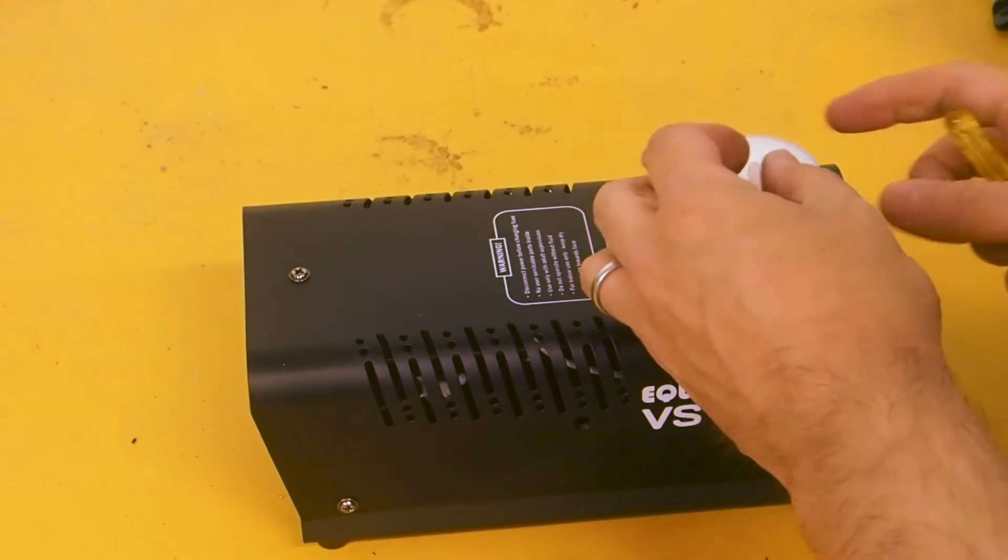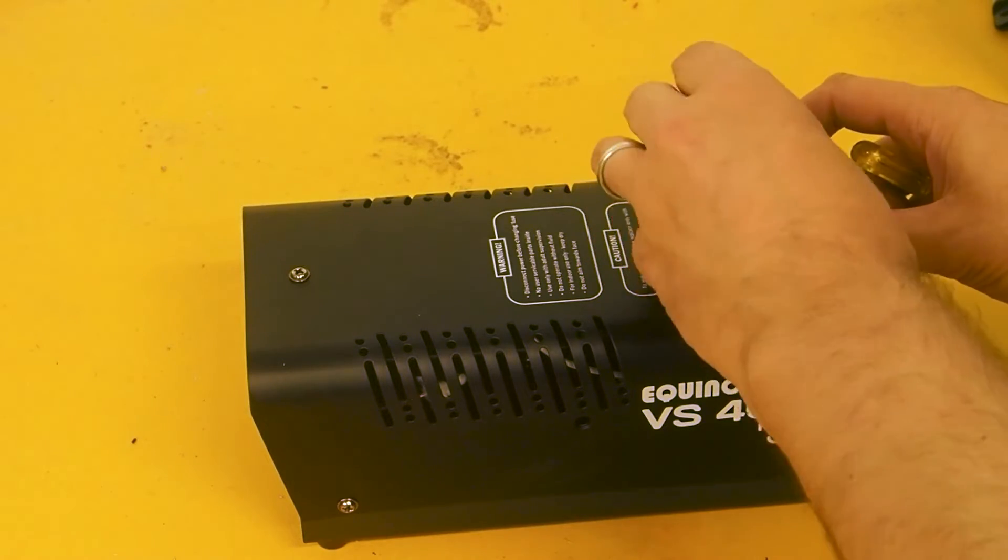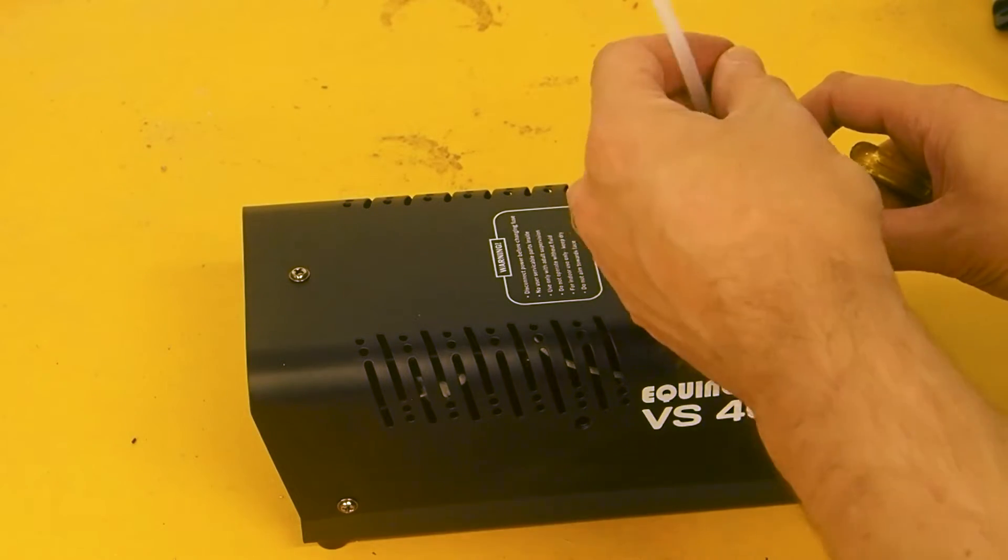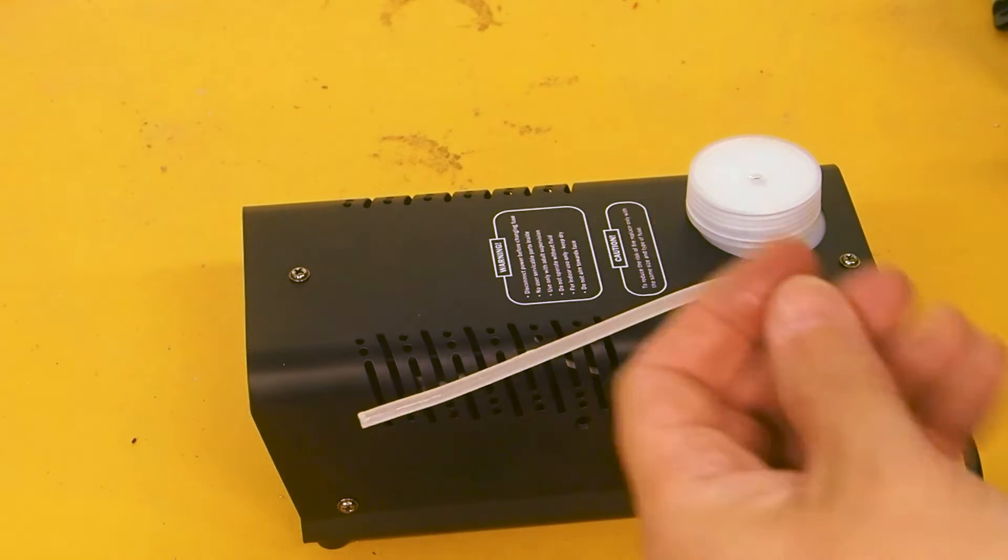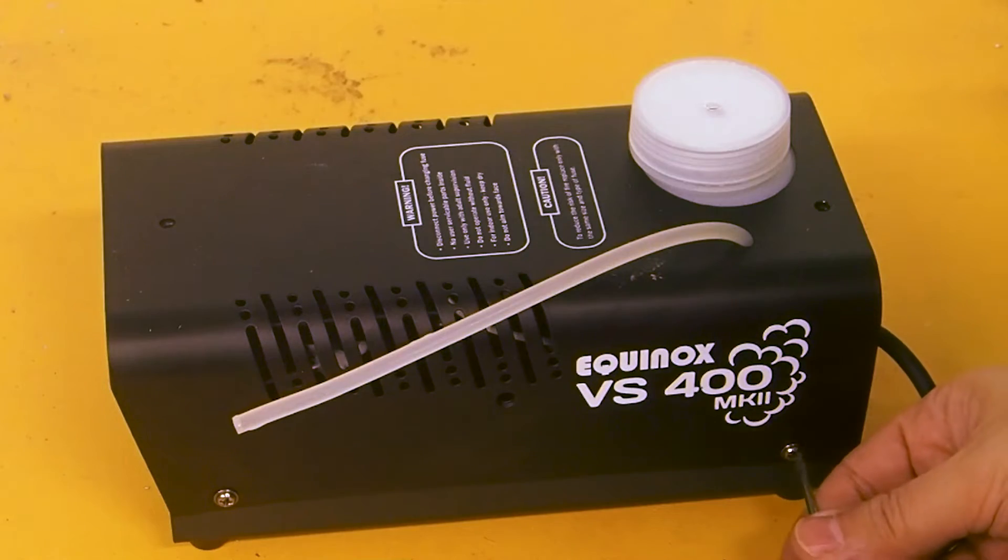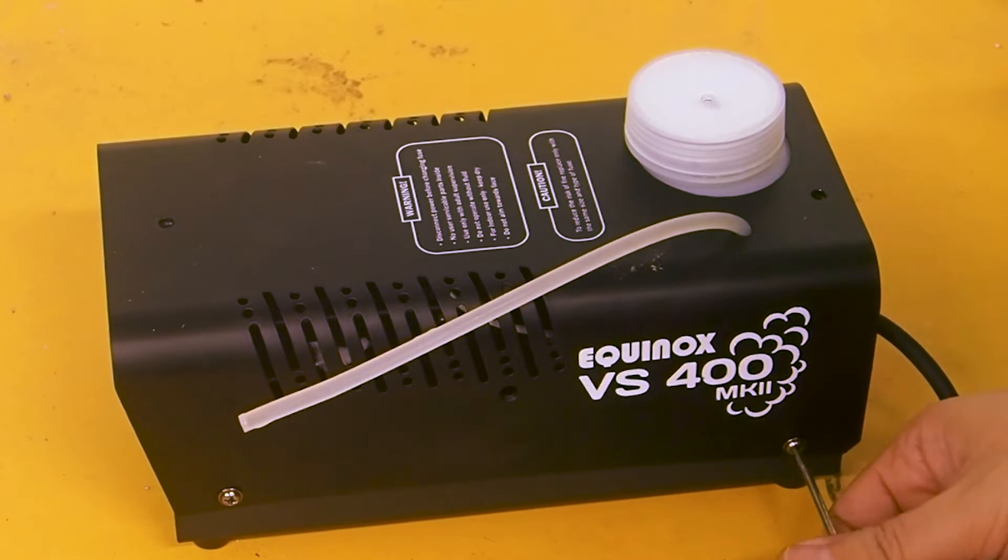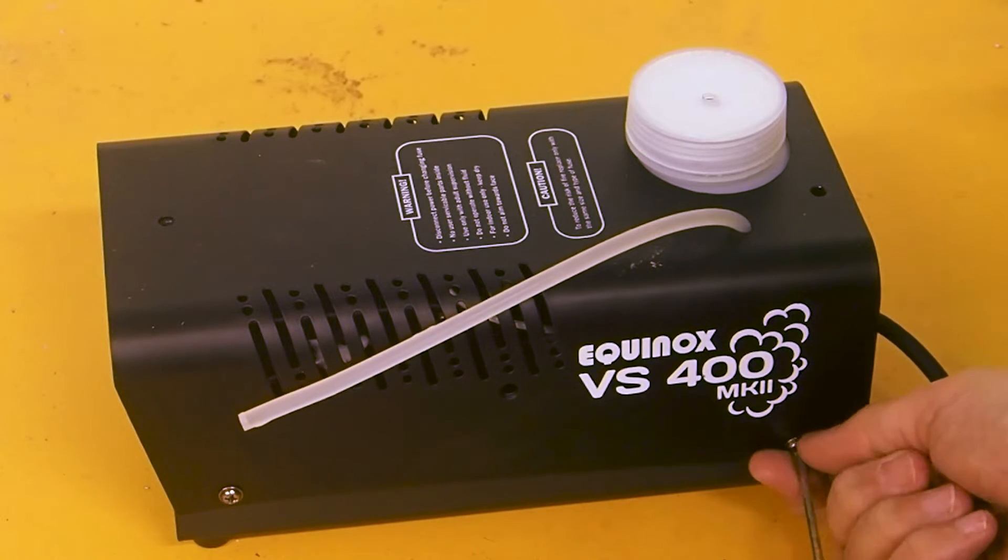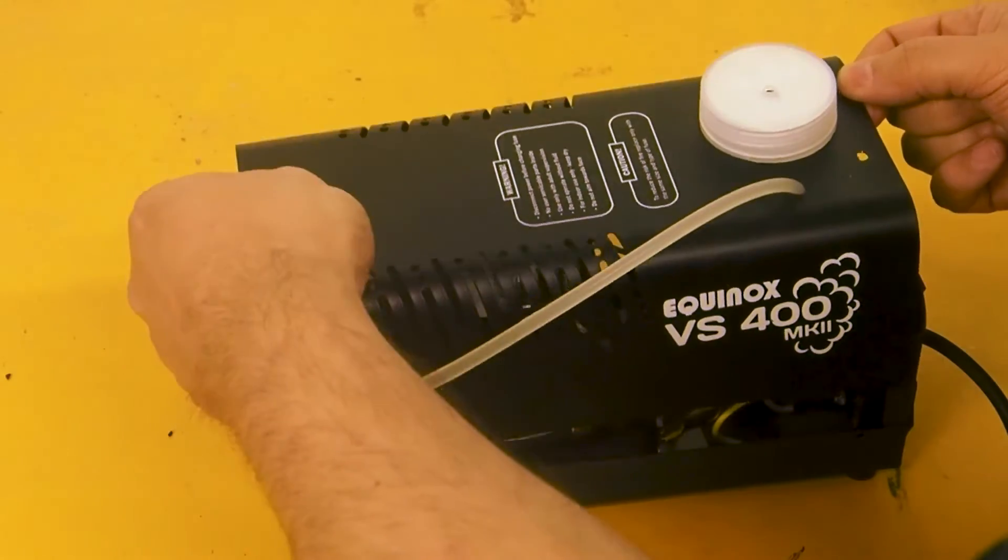I'm going to give it a few minutes, and then let's crack it open and see what's inside. The first thing to do is remove the little pipe that sucks up the smoke juice, and then we've got a number of screws to remove. In this particular model, we've got two on the top, two on the front, and two on the back.